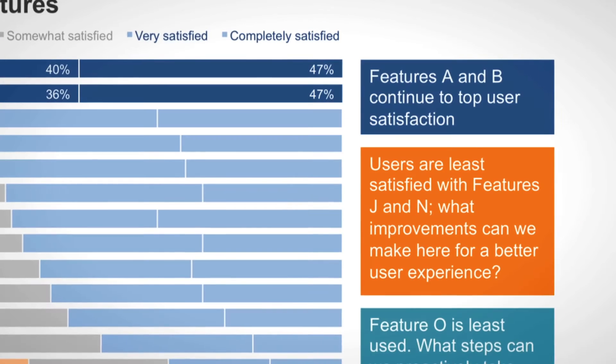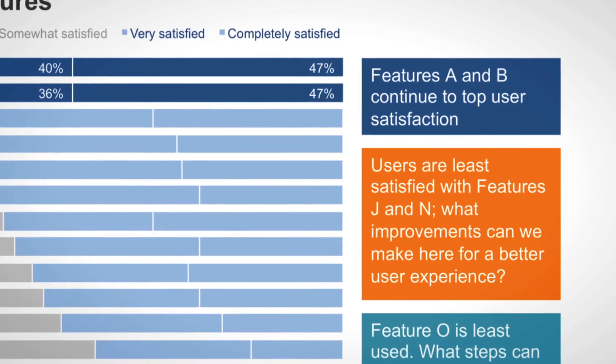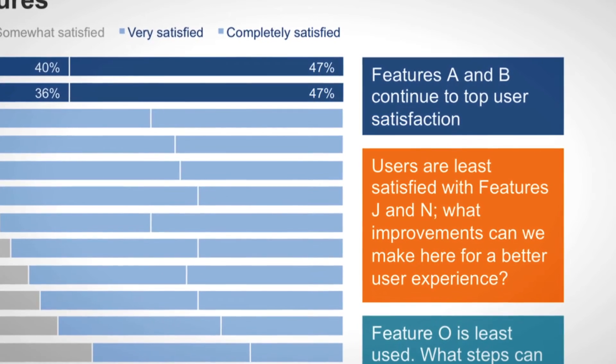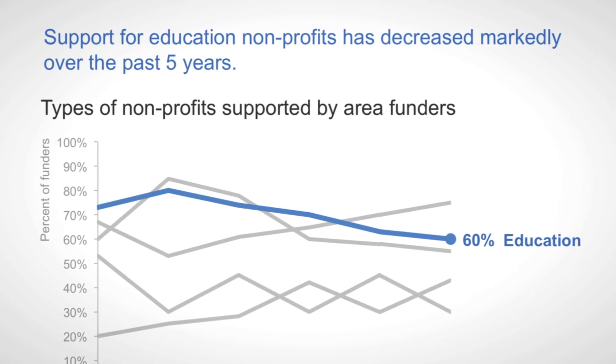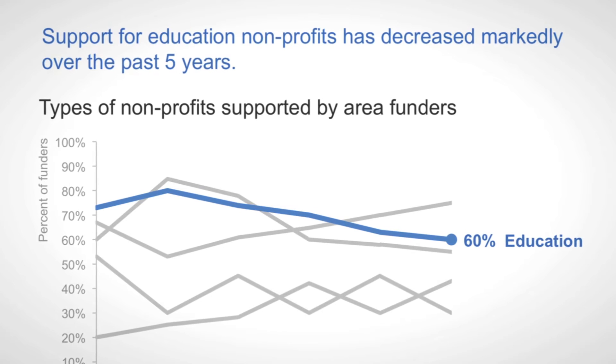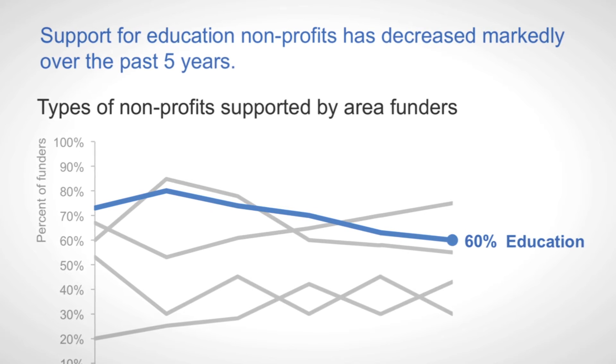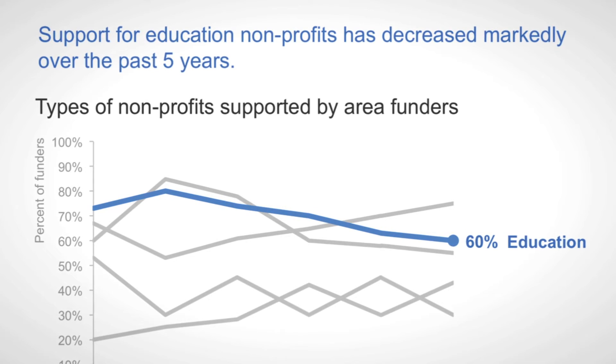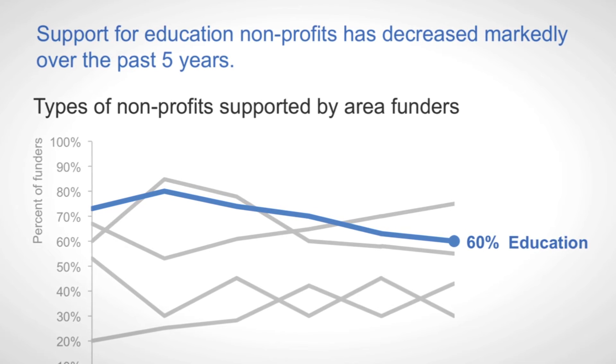You want to use text to label, to title, to explain. Don't ever assume that somebody else looking at the same data visualization is going to walk away with the same conclusions.